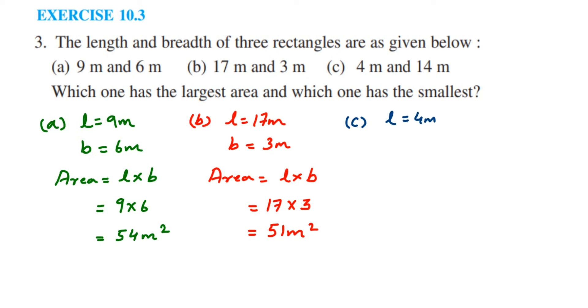And the last one, we have length as 4 meter and breadth is equal to 14 meter. So area is equal to length into breadth. Length is 4 multiplied by breadth is 14. 14 times 4 is 56, so we'll get 56 meter square.